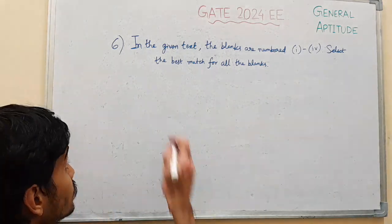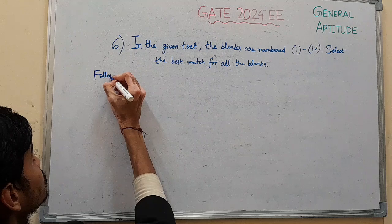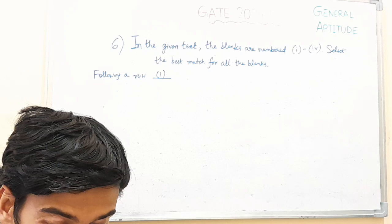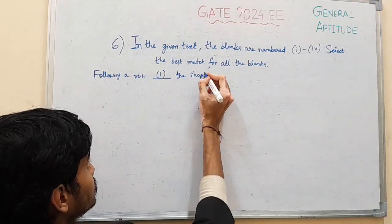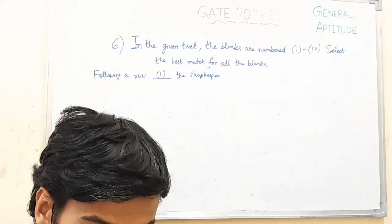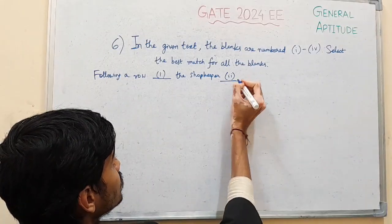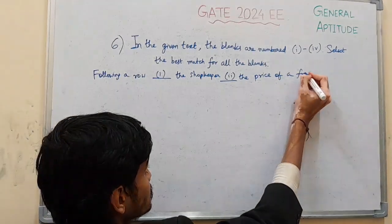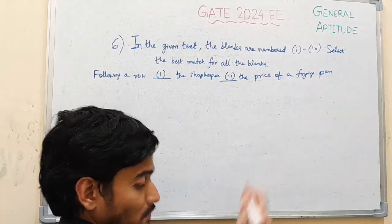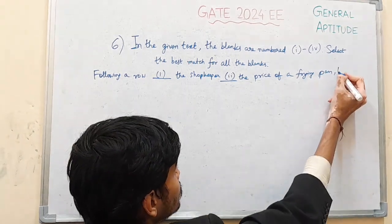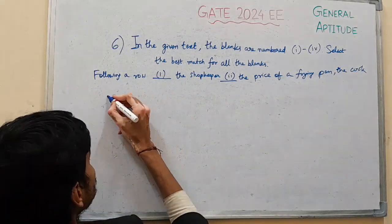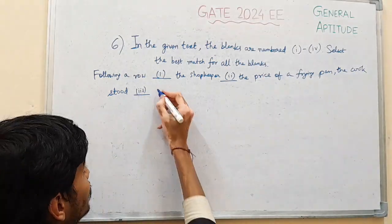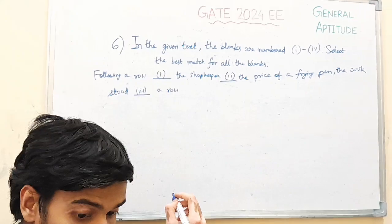The sentence is: Following a row ___ the shopkeeper ___ the price of a frying pan, the cook stood ___ to withdraw cash ___ the ATM booth.